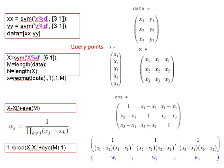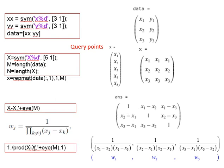We take X minus the transpose of X, computing all possible subtraction values. The first row has x1 minus x2, x1 minus x3, and so on. We add the identity matrix to avoid division by zero when calculating W_j. We take the inverse of the product of this matrix. We put ones on the diagonal so that there are no zeros in the diagonal, and by this operation we can calculate W1, W2, W3.